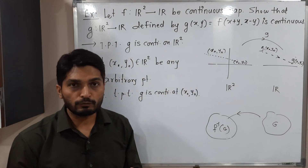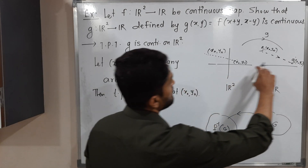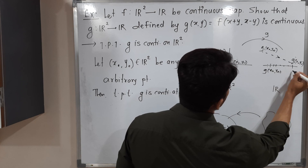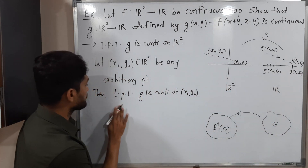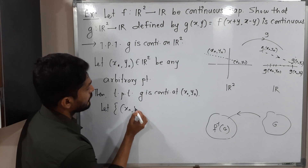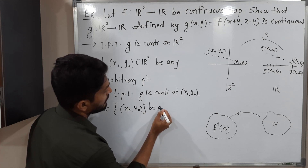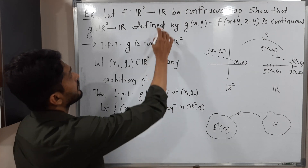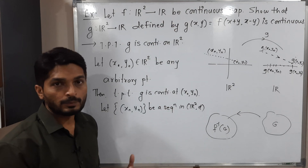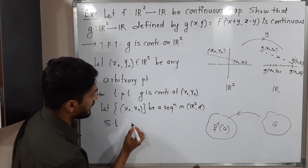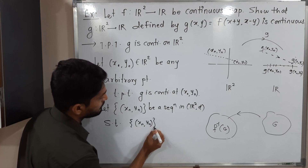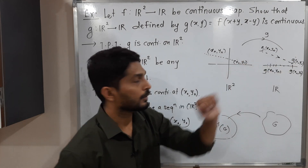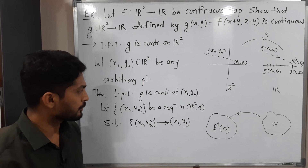For this we need a sequence (xₙ,yₙ) which converges to (x₀,y₀). What we have to prove is that g(xₙ,yₙ) converges to g(x₀,y₀). Let (xₙ, yₙ) be a sequence in (ℝ², d) — where d is the Euclidean distance and ℝ is with the usual distance — such that the sequence (xₙ,yₙ) converges to (x₀,y₀).